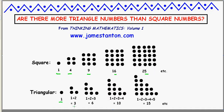And the triangle numbers: 1, 3, 6, 10, 15, and so on. They come from arranging pebbles into triangular shapes.